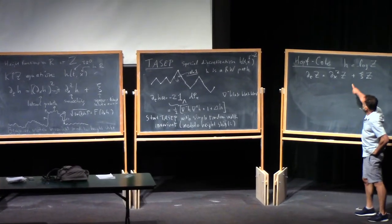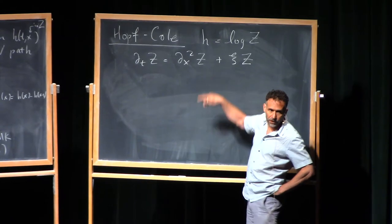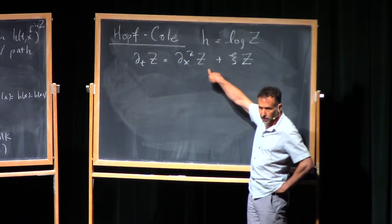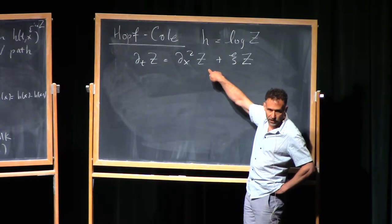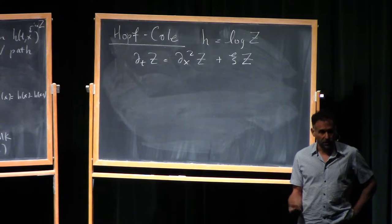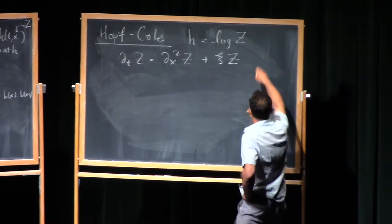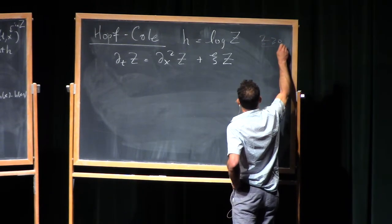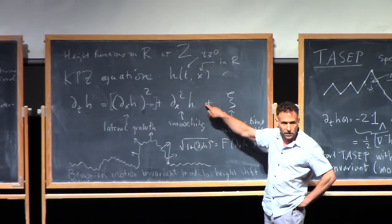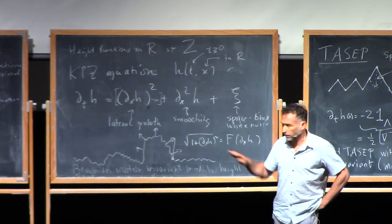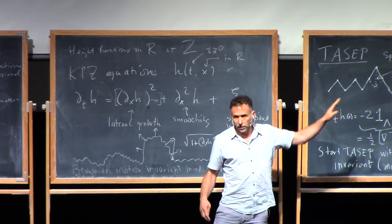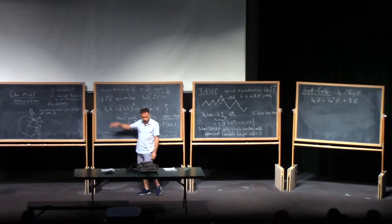On the other hand, the equation for Z = e^h is actually in good shape — it's one of the few stochastic PDEs you can actually make sense of. You can start with space-time white noise, make sense of Z, and the answer is a nice continuous function that's never equal to zero as long as you start with something positive. Then you can take log of it, and that log you can just decree to be the solution of the KPZ equation. That's called the Hopf-Cole solution of KPZ. Martin Hairer has a very elaborate theory that in the end proves his solution is the Hopf-Cole solution.